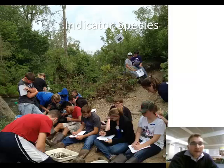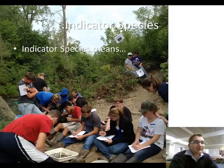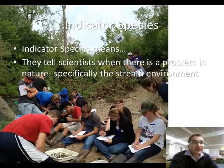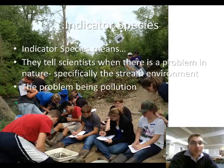There are certain types of macroinvertebrates that are indicator species. An indicator species is an organism that tells a scientist if there is a problem with that body of water — the problem being pollution.